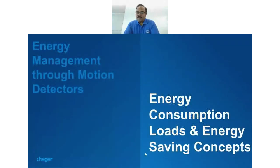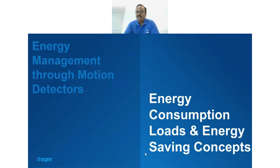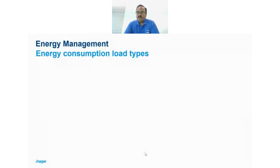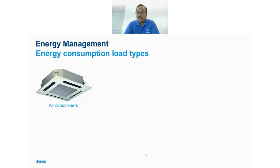Before going into details, let's understand what consumption loads exist in homes or offices. When we look around, air conditioners consume a lot of energy in offices as well as at homes. Water heaters also consume energy, and there are a lot of lights — both indoor LED lamps and outdoor lights such as garden lights, compound wall lights, and facade lights.